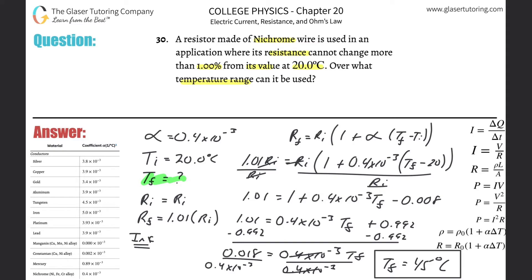That's not necessarily the complete answer. It started at 20°C and a 1% increase gives an upper bound of 45°C. But the problem says the resistance cannot change by more than 1% — it doesn't say increase or decrease — so I need to look at both directions.